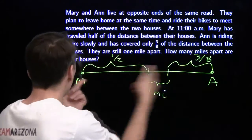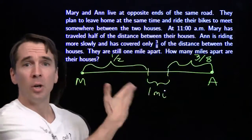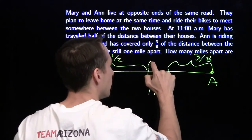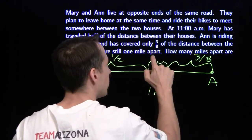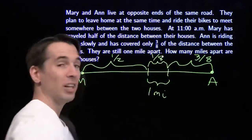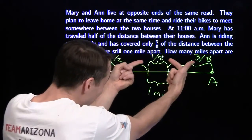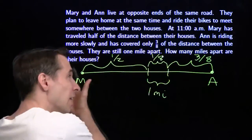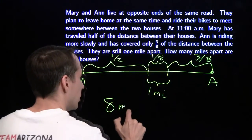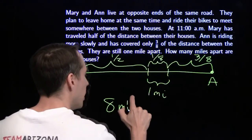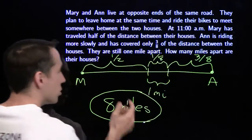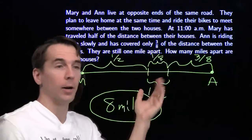We're looking for how many miles apart their houses are. Well, the answer's right there in the diagram — we fill in the missing piece. This little piece has got to be one-eighth of the whole distance. If this is a half and this is three-eighths, there's the last eighth. And if this piece is an eighth of the distance and that's one mile, then the whole thing has to be eight miles. No big equation, no rate times time equals distance — we just drew a picture, and the answer was right there in our diagram.